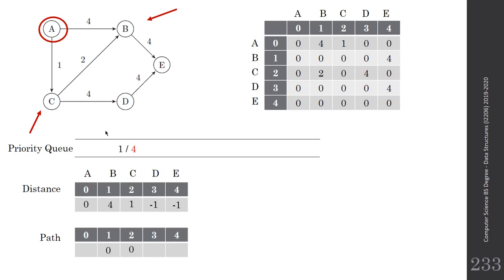Then we move to C. The distance to C equals 1 and the path comes from vertex zero. We enqueue element C with distance 1 in the priority queue. Pay attention that C will come in front of B (1, 4) since its distance is 1, which is smaller.